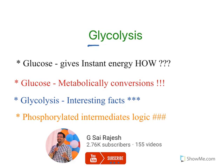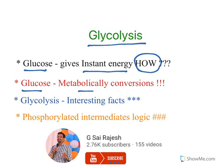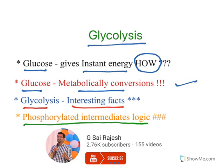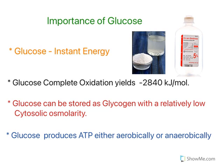Hello everyone, welcome to the class on glycolysis. In this video I am going to explain about why glucose is considered to give instant energy, how it can give us instant energy, what are the metabolic conversions of glucose that take place in a cell, glycolysis interesting facts, how the pathway goes, and phosphorylated intermediates — there are nine phosphorylated intermediates in glycolysis and what is the logic behind them.